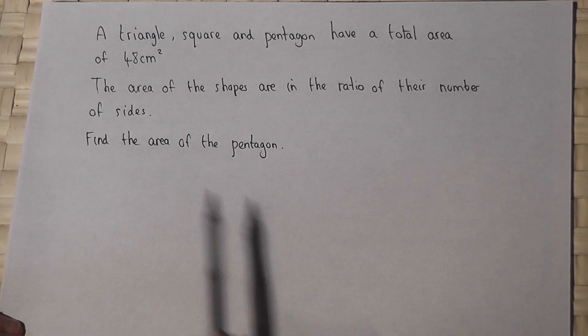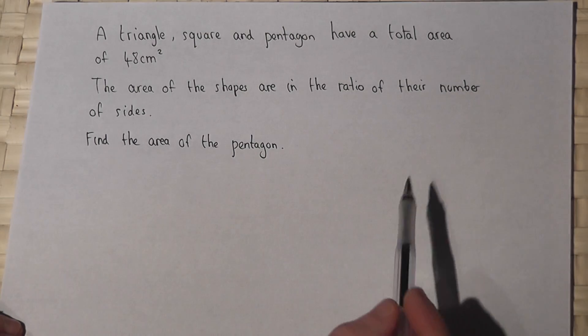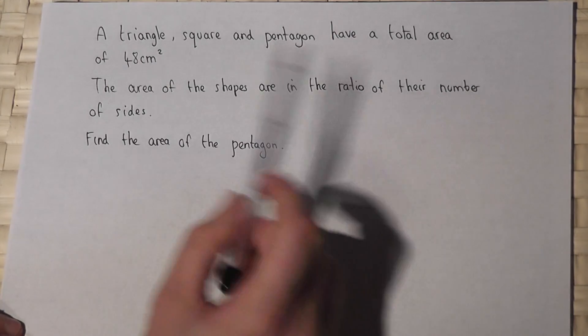This video looks at a nice little ratio problem involving a triangle, square and pentagon. And we're told that the total area of all three shapes is 48.